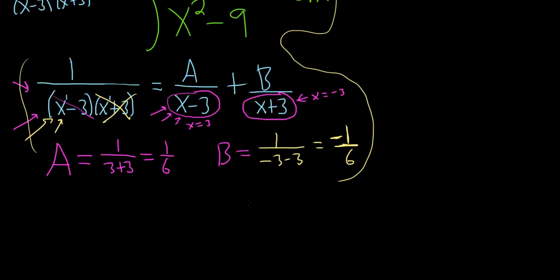Okay, so enough about the cover-up method. Let's keep going. So notice now we have A and now we have B. And so you're supposed to plug it in up here. So it's supposed to be like 1 sixth over x minus 3. And then the next one is plus negative 1 sixth x plus 3.